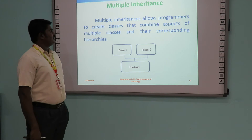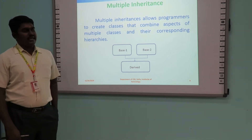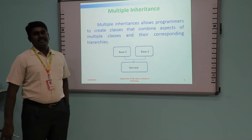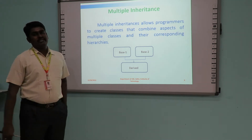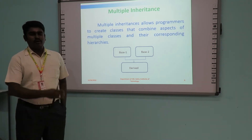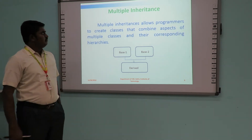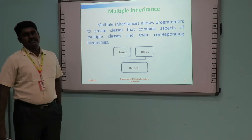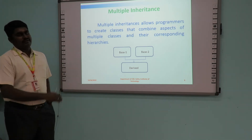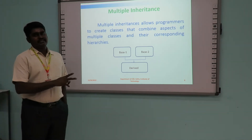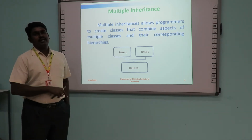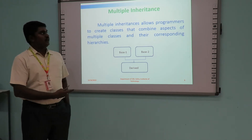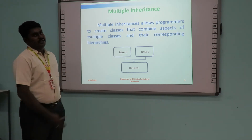Next one is multiple inheritance. In the previous case we had one base class and one derived class, but in this case we have two base classes and one derived class. When there is more than one base class for a derived class, that concept is called multiple inheritance.